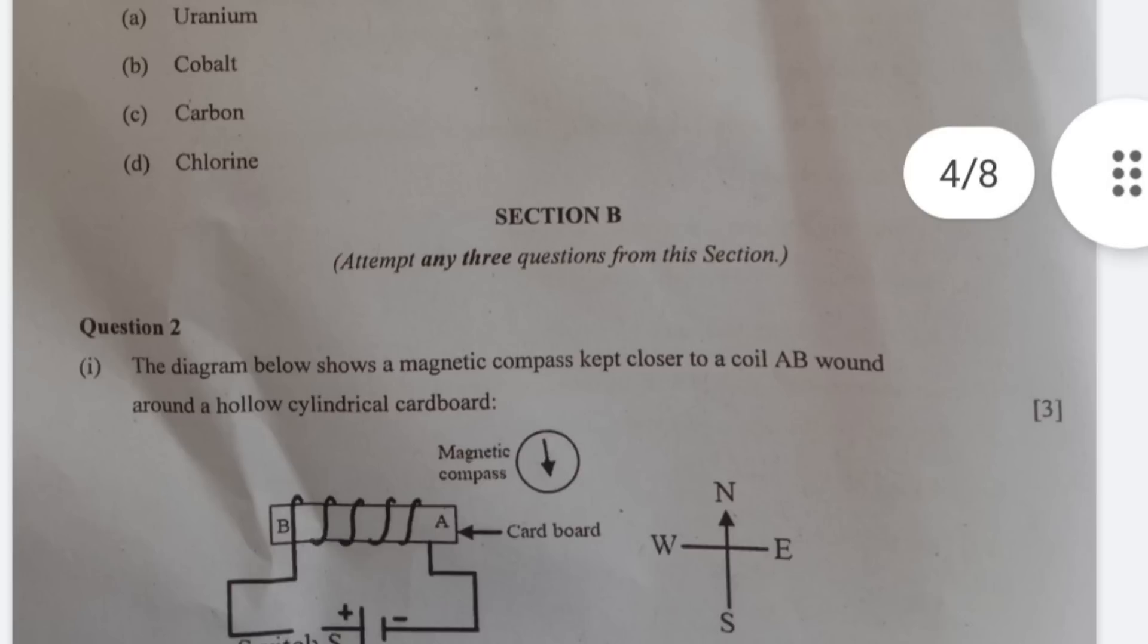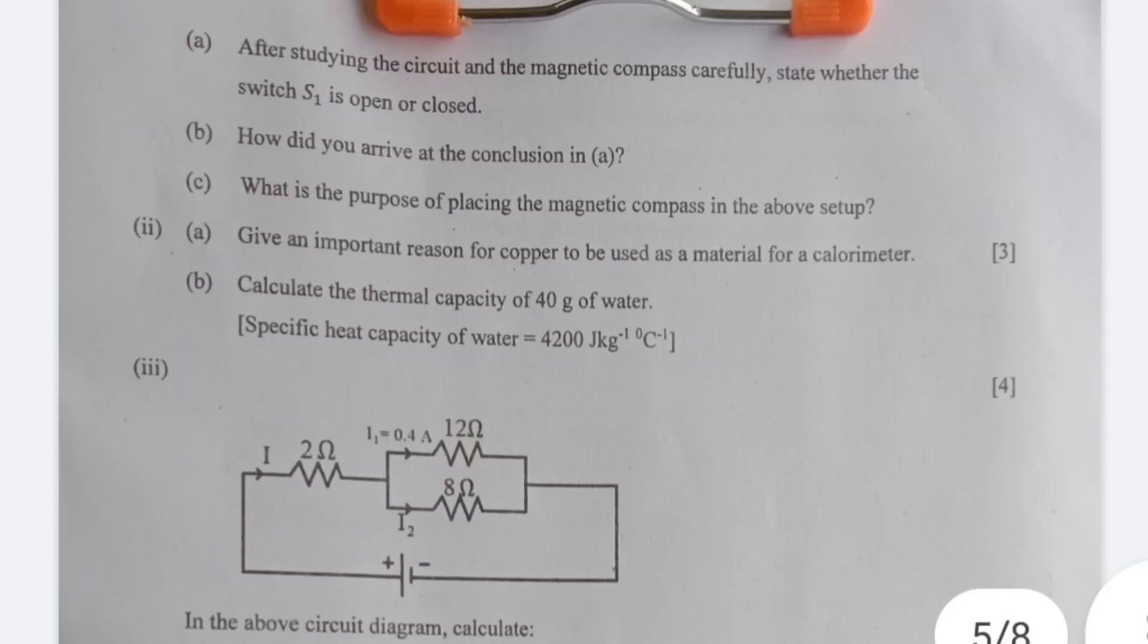Let's now move to section B. Of course you have to do three questions but we will deal with the answer key to all the questions. Now the second question and this is what most students seem to have had a doubt about. After studying the circuit and the magnetic compass carefully state whether switch S1 is open or closed. The moment it was written carefully that was an indication that students will make a mistake with this googly question and some students seem to have erred here.